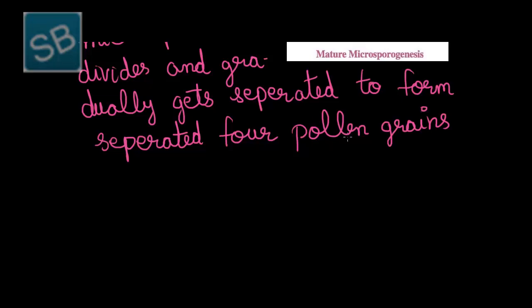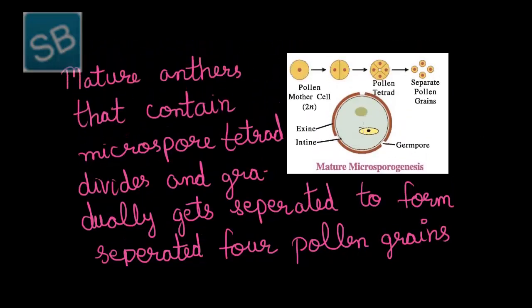Thus, during the dehiscence of the anther, such pollen grains in the form of mature microspores get released. And that is how the fertilization process starts. This figure depicts the structure of a typical pollen grain, which contains an outer layer, an inner layer, and the germ pore — a pore through which the pollen grain is liberated and combines with the ovary to undergo the fertilization process.